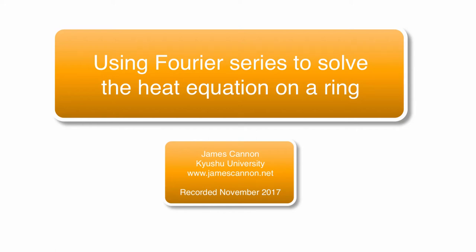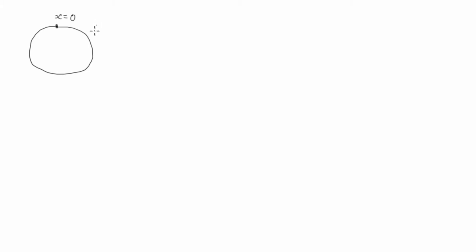What I'd like to do in this video is go through the derivation for the heat equation on a circular ring. The setup we have is some sort of circular ring. We'll call this point here x equals zero, so x will represent position on the ring. If we go around the ring in this direction and go all the way back again, we'll have completed one circle. The circumference of this ring is one unit, so that when x equals one, we're back to the same position as when x was equal to zero.